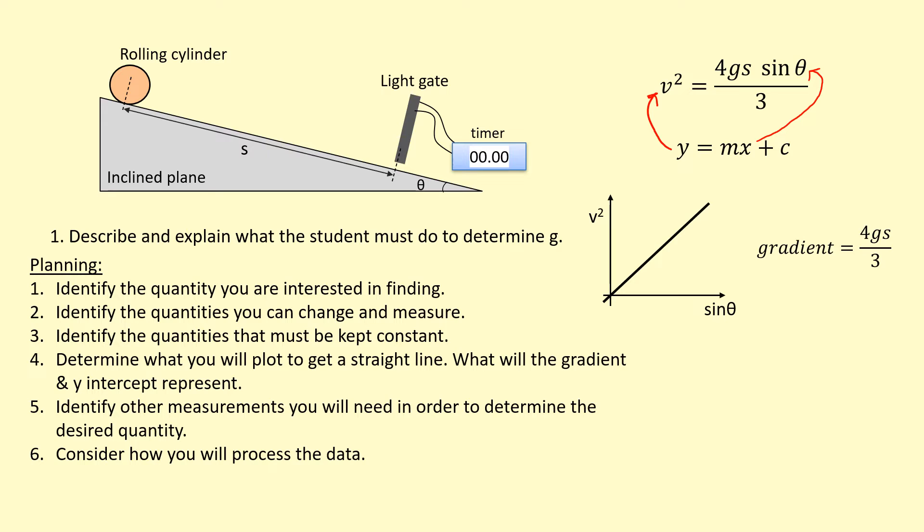Then consider how you'd process the data. Even though we've got the gradient, we haven't actually explained how we get the acceleration due to gravity G. We're going to rearrange this. Do gradient times 3 divided by 4 and divided by S, which is the distance we just measured, and that will give us the acceleration due to gravity.